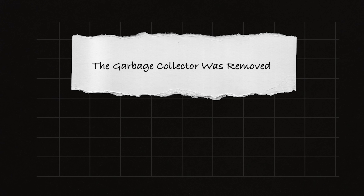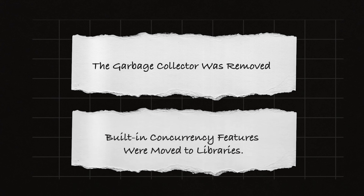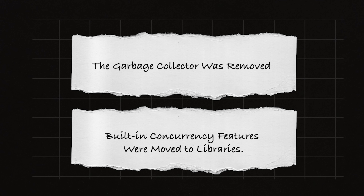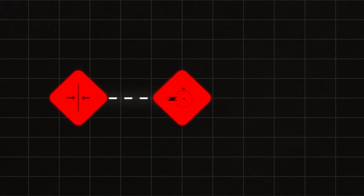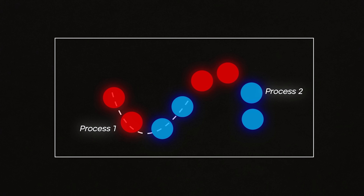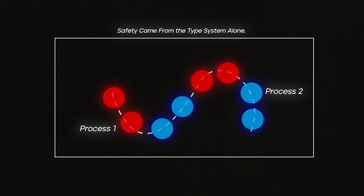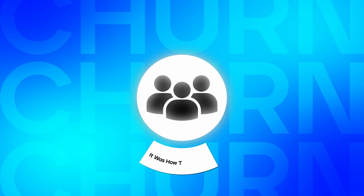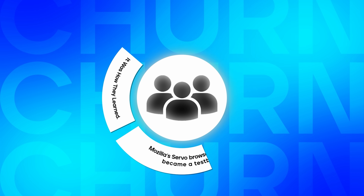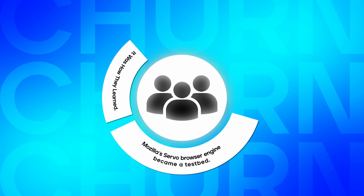The garbage collector was gone. Built-in concurrency features were moved to libraries. The goal was to make Rust leaner, faster, and more flexible. Concurrency now used external libraries for message-passing and threading; safety came from the type system alone. Rust was still unstable — nightly releases broke code constantly — but the team embraced this churn. It was how they learned. Mozilla's Servo browser engine became a testbed; its developers pushed Rust to the limits and gave vital feedback.